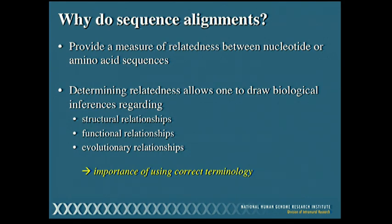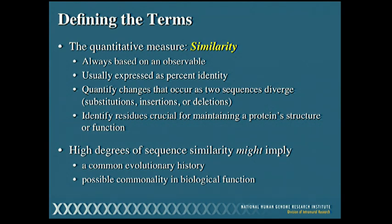As we start to talk about these things, it's important to use the right words. When we align two sequences — sequence A and sequence B — the easiest metric we have to assess how good that alignment is is to simply count how many positions match between sequence A and sequence B. That observable is called similarity, usually expressed as a percent identity. You can use that to quantify changes as two sequences diverge from one another by looking at substitutions at individual positions, insertions, or deletions. You can also use them to identify residues crucial for maintaining a particular protein's structure or function.